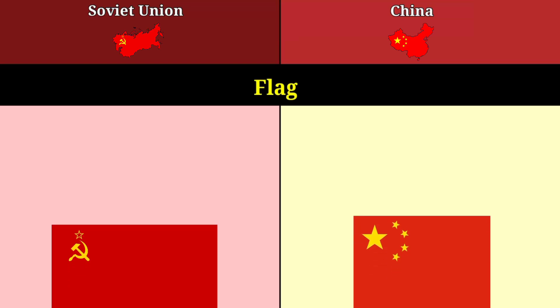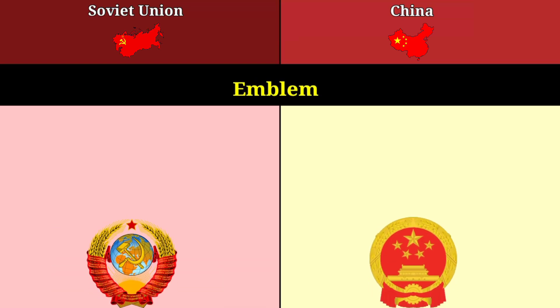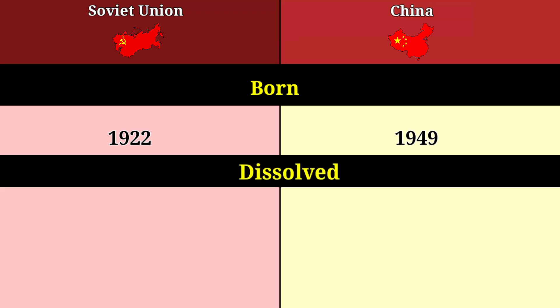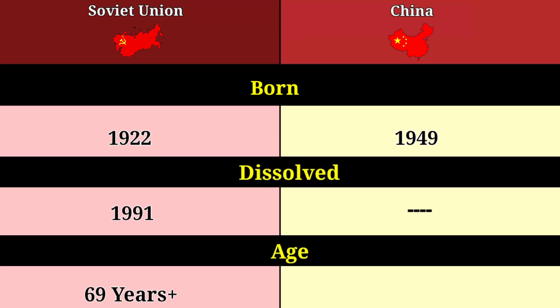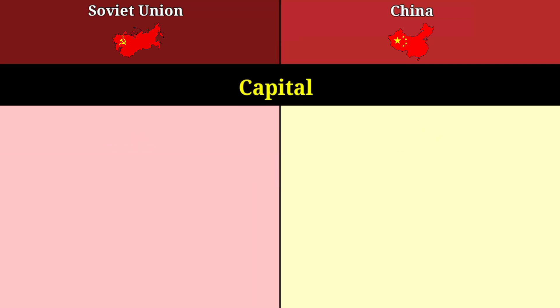Flag. Emblem. Born: 1922 for the Soviet Union, 1949 for China. Dissolved: 1991 for the Soviet Union. China has not dissolved. Age: more than 69 years for the Soviet Union, more than 74 years for China.